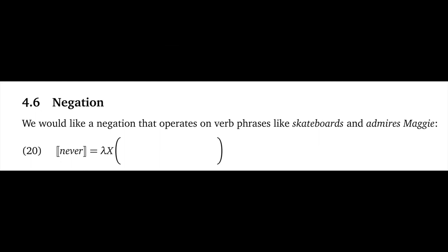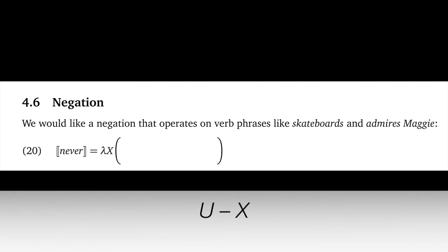The final meaning I want to cover in this screencast is negation. What we want is a negation that will operate directly on verb phrases, either intransitive verbs or transitive verbs that have combined with their objects. And you might pause here and see if you can fill in the appropriate missing meaning. We want to take in, for example, the meaning of skateboards and have it produce all of the non-skateboarders from our universe.